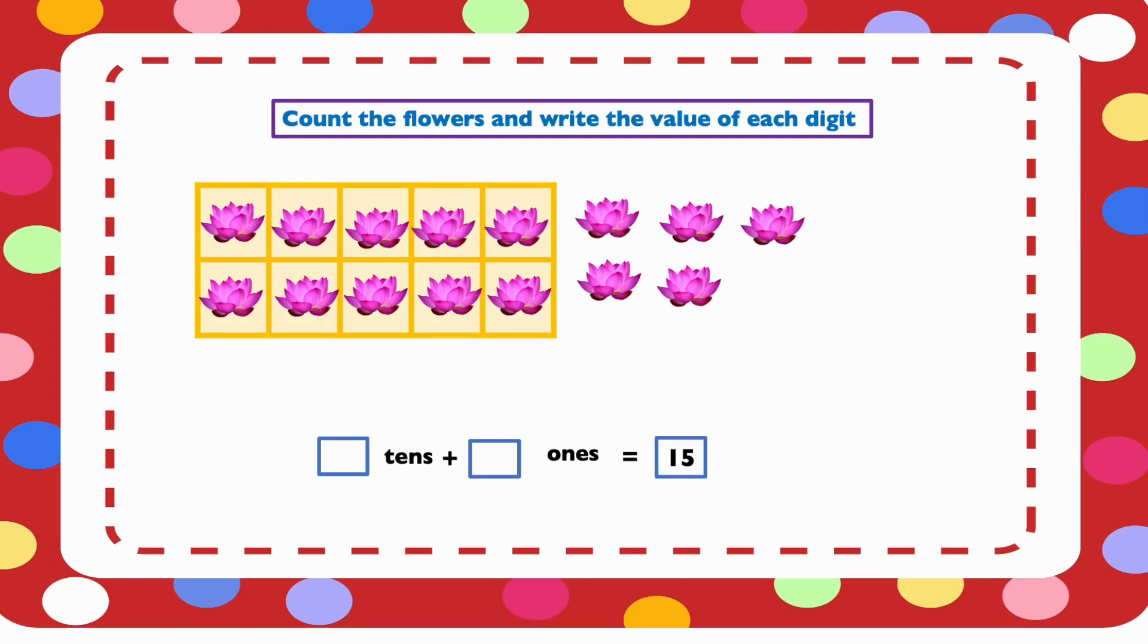We have 1 group of 10. And let's keep counting: 11, 12, 13, 14, 15. So we have 1 group of 10 and 5 ones. The value of 1 is 1 ten and the value of 5 is 5 ones.